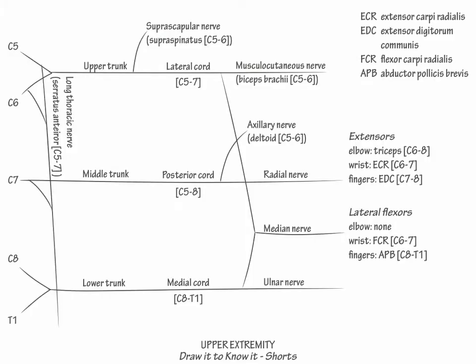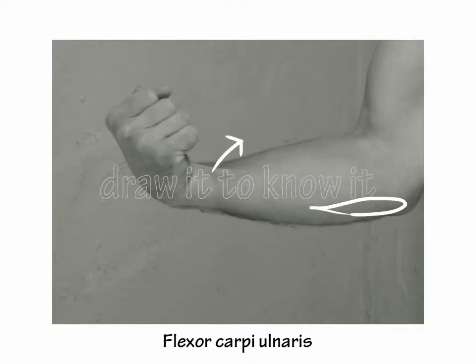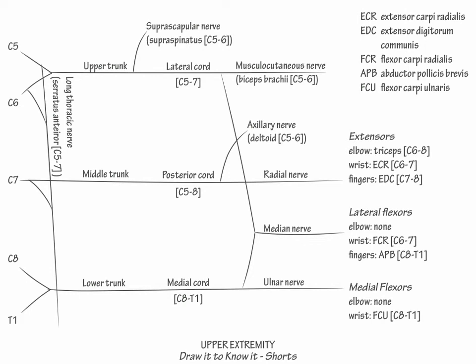Next, generally the ulnar nerve innervates muscles within the medial upper extremity that provide flexor movements. Like the median nerve, the ulnar nerve's innervation is to muscles distal to the elbow. It innervates flexor carpi ulnaris C8 to T1, which flexes the wrist with medial deviation,